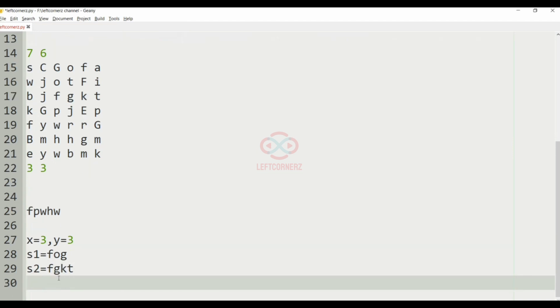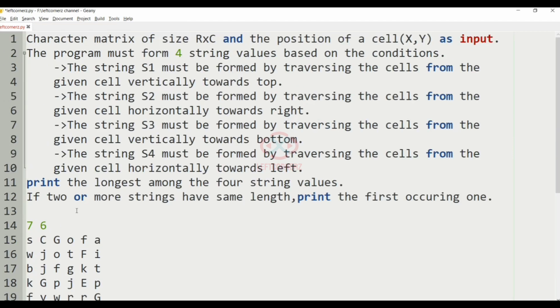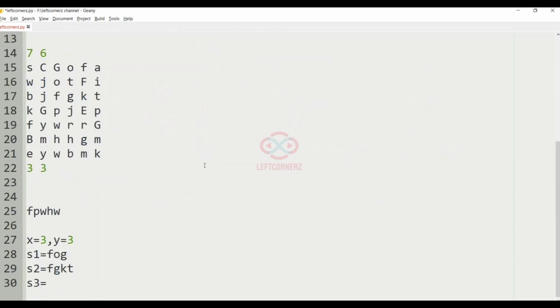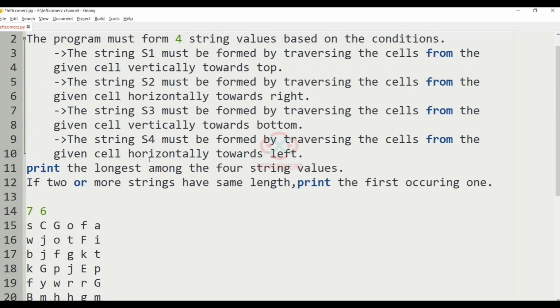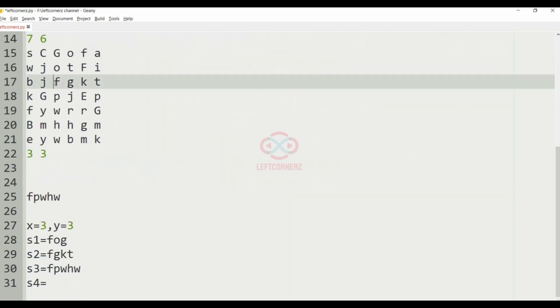And then our S3 will be vertically down, so it will be like F P W H W. And then our S4 is horizontally towards left, so it is F J B.